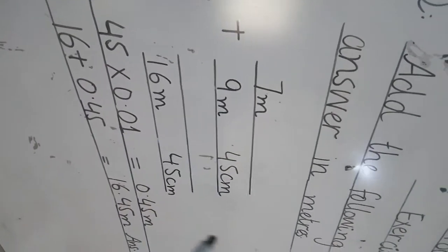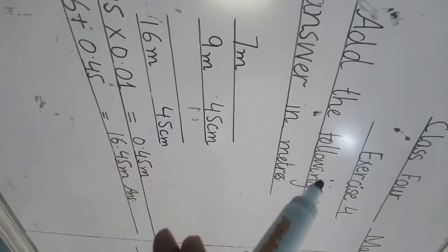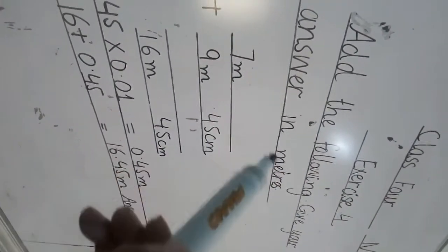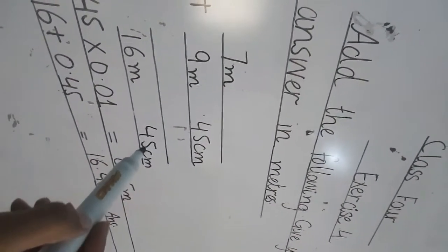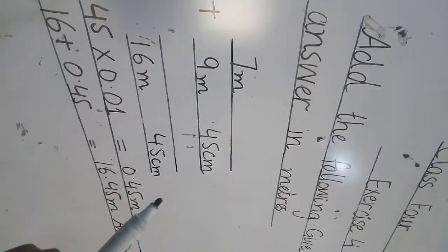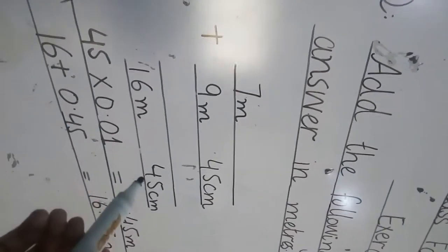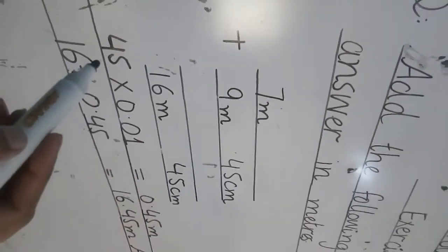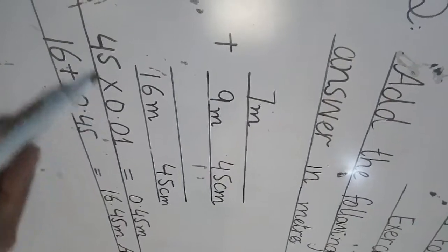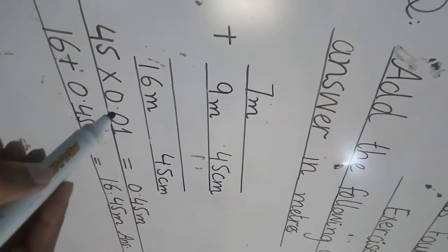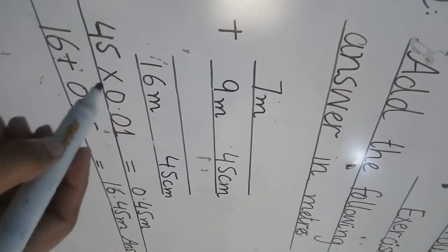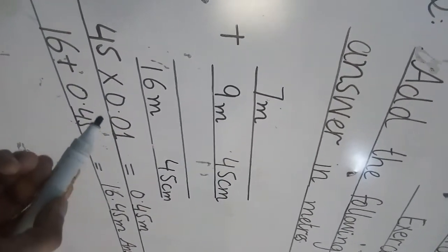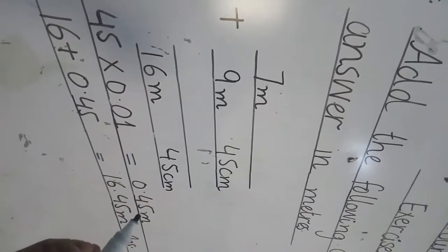But as you see, our statement said that give your answer in meters. Our full answer should be in meter. So we will change this 45 centimeter into meter. How can we change this centimeter? By multiplying it with 45 centimeter, multiply by 0.01 or you can say that divide by 100.